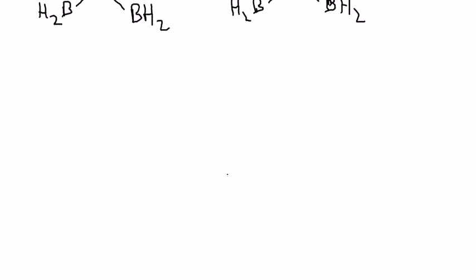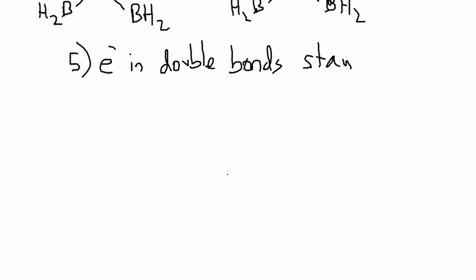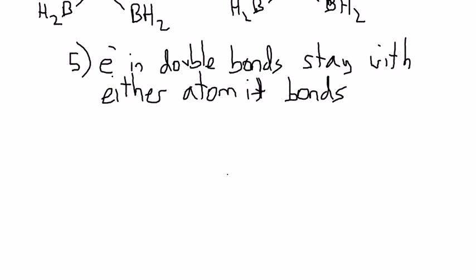Let's go on to rule number five. Rule number five is that electrons in double bonds stay with either one of the atoms in the bonding. So either atom it bonds.